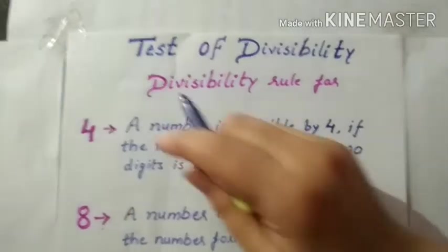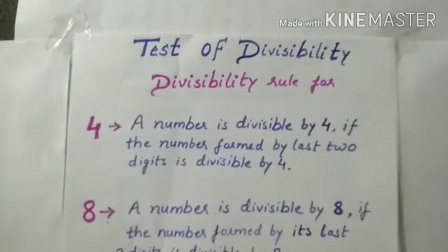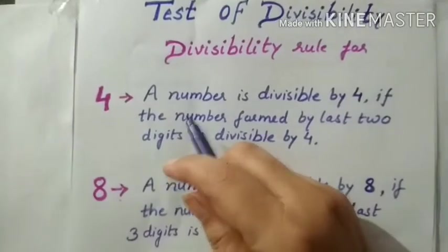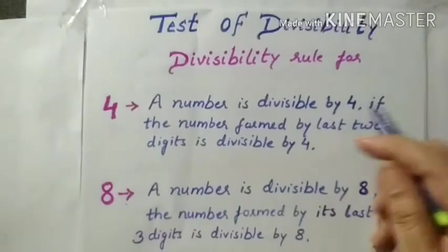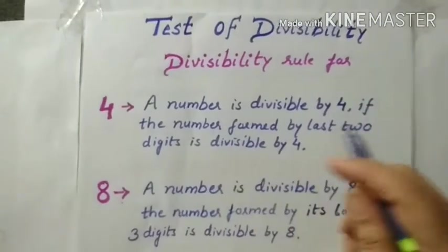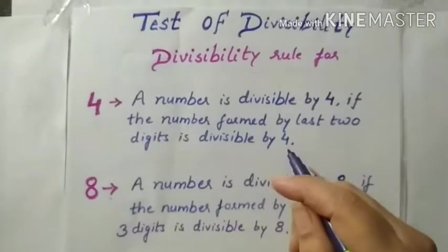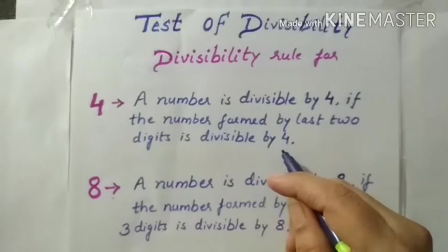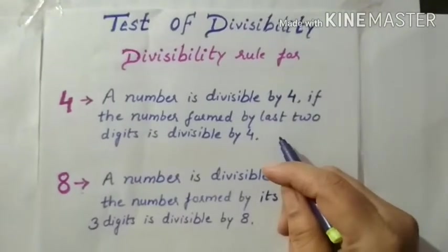In previous video, I have explained you test of divisibility. So the divisibility rule for 4. A number is divisible by 4 if the number formed by last 2 digits is divisible by 4. If the number is divisible by 4, then the whole number is divisible by 4.